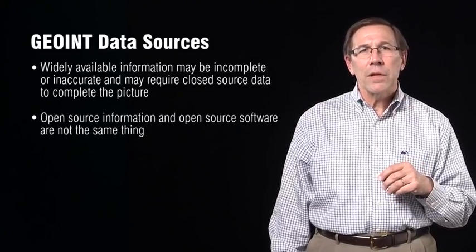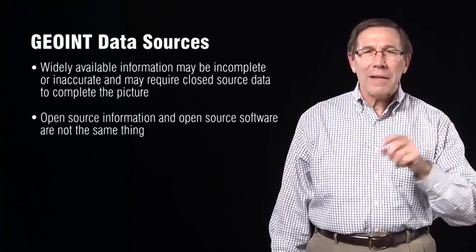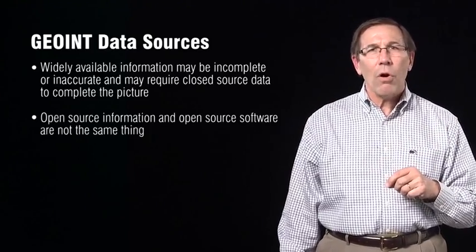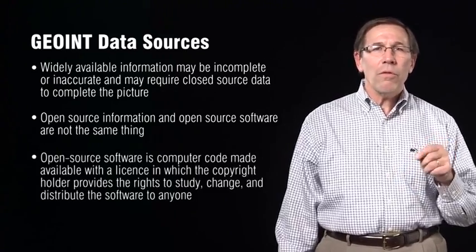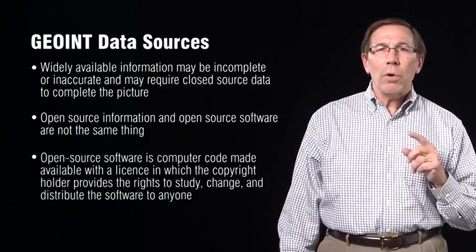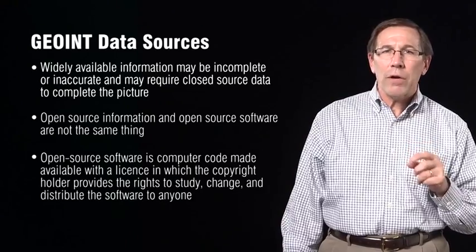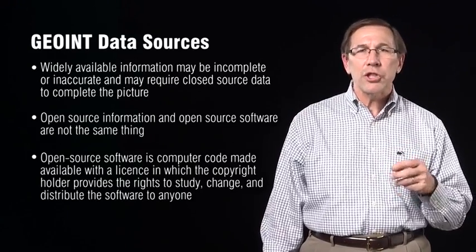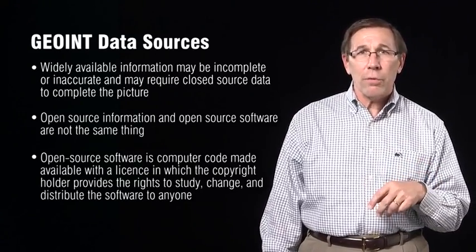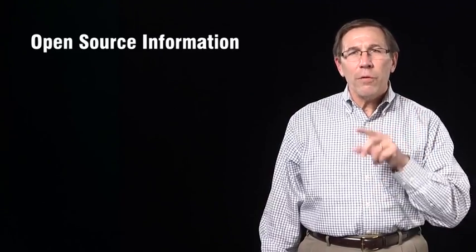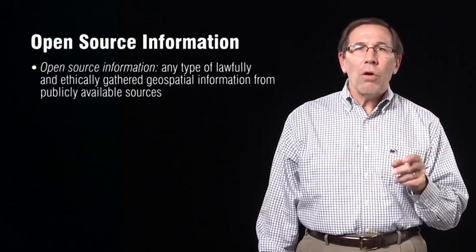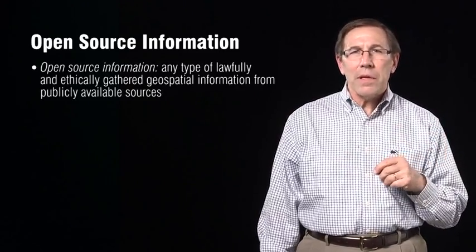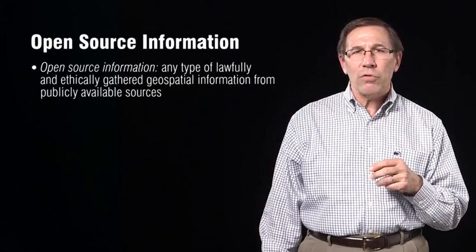Open source information and open source software are not the same thing. These are terms that are often confused, particularly within the intelligence community. Open source software is computer code available with a license in which the copyright holder provides the rights to study, change, or redistribute the software. Open source information is any type of information that is lawfully and ethically gathered about something, and it typically comes from publicly available sources.